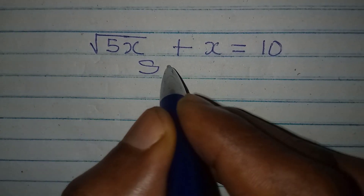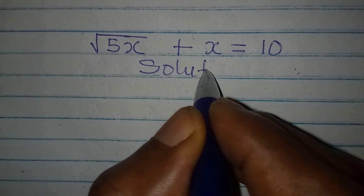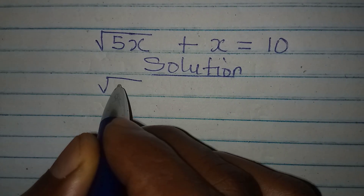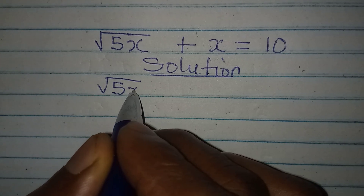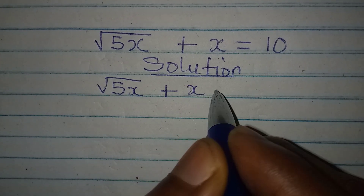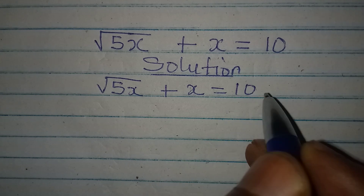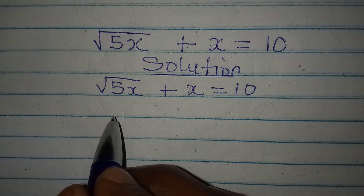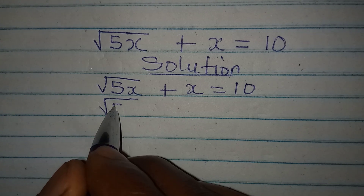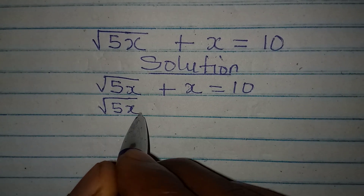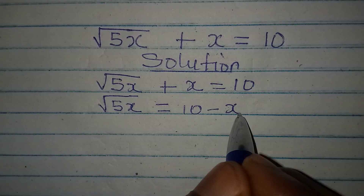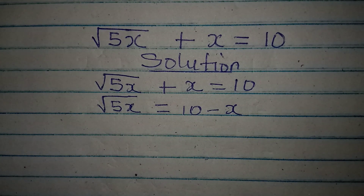Hello everyone, let's provide a solution to this problem. We have square root of 5x plus x equal to 10, and this question is asking us to find the value of x. The first thing is to make the square root of 5x the subject, so we have square root of 5x equal to 10 minus x.